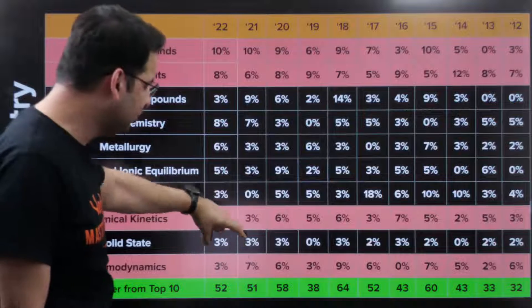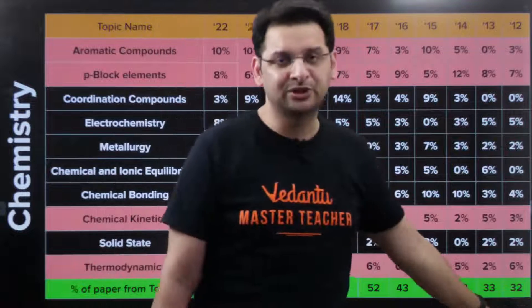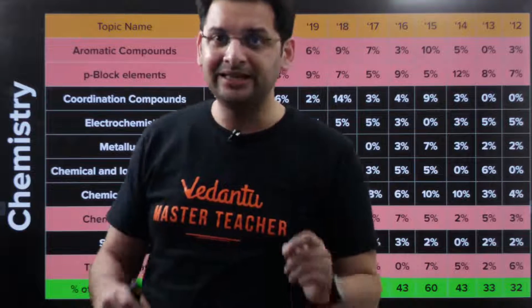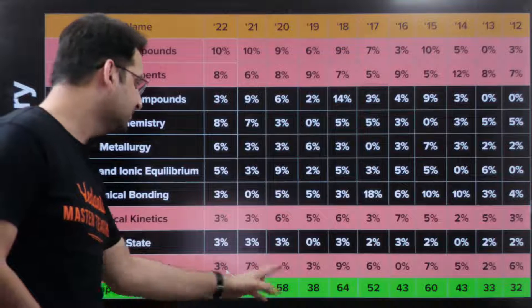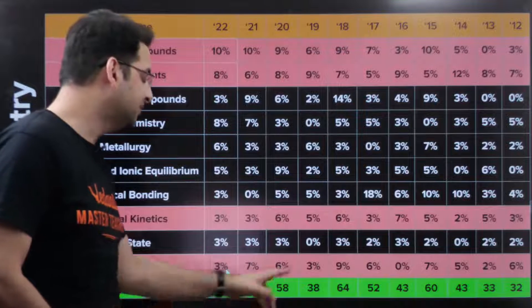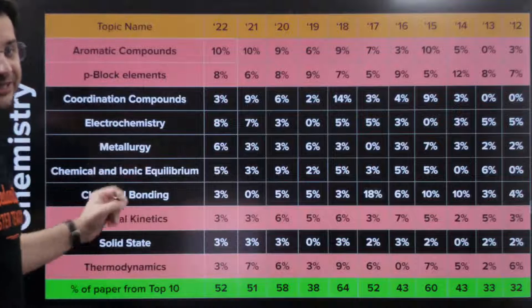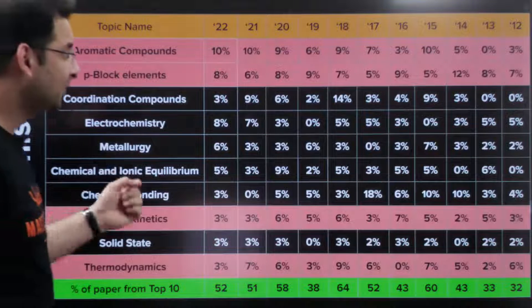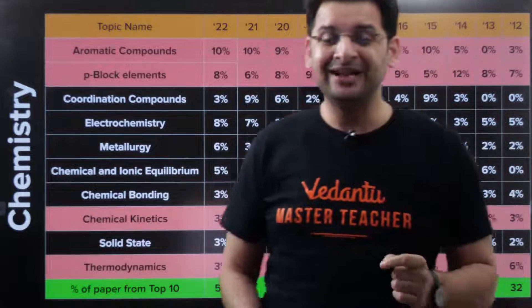But again, these 10 topics are very important because lately these 10 topics have been contributing more than 50%. Sometimes, of course, the contribution is as low as 30% also. But lately these topics have started contributing in JEE Advanced. You can see the trends. 58%, 51%, 52%, 38%, 64%. So I hope this is clear and you can again take the screenshot of chemistry to tell you how important these chapters are.